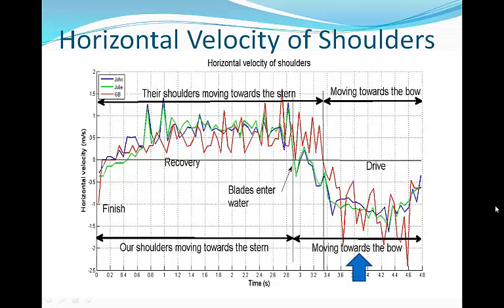The graph starts at the finish and tracks one full stroke ending at the finish. You can see that all of us have pretty much the same speed of shoulders during the recovery. The difference between us and the Britons occurs just as the blades touch the water at the catch. The Britons' shoulders keep moving towards the stern as the blade is buried, as indicated by positive velocities for the red line, while our shoulders have already changed direction and started moving towards the bow, as you can see by the green and blue lines having negative velocity.